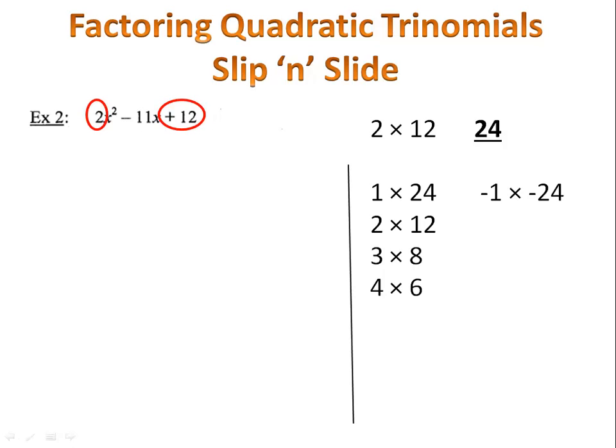We could have negative 1 times negative 24, negative 2 and negative 12, negative 3 and negative 8, or negative 4 and negative 6. Now let's take a look at our trinomial again. We're looking for that pair of numbers that adds up to negative 11. When we go through the list, we find that negative 3 plus negative 8 gives us negative 11.